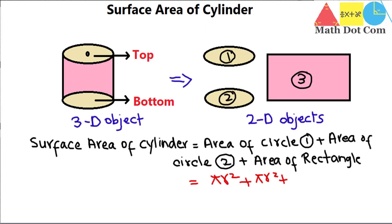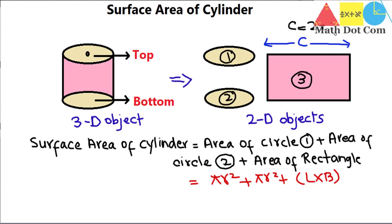Now, the important thing here is to find the area of the rectangle. The area of a rectangle is length times breadth. Now, what is the length in this case? We have opened the cylinder so that we can get a rectangle, and when we roll the rectangle back we get the cylinder again. This means the length of this rectangle is actually the circumference of the circle. The circumference of the circle is equal to 2πr, and its height is h.